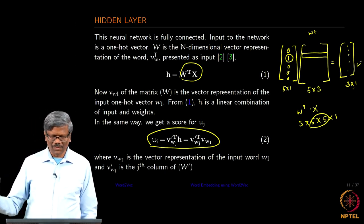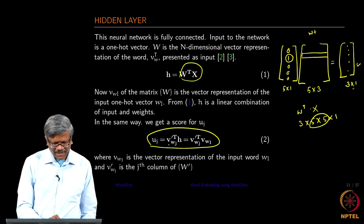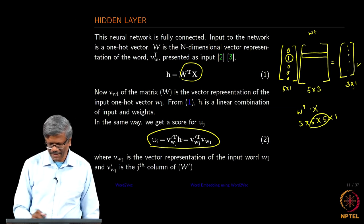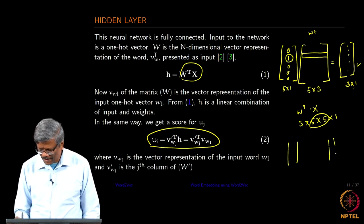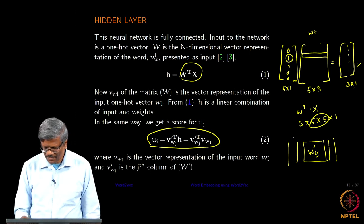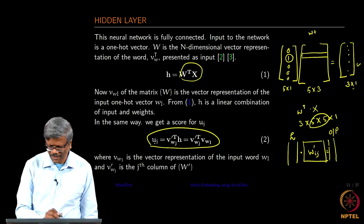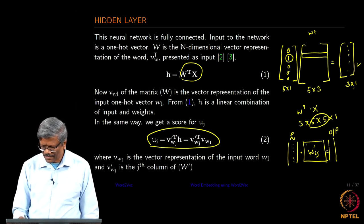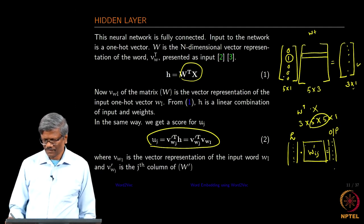We have done the calculation of h using this model. Now we have the other side from the hidden layer to the output. We apply a similar mechanism to compute u_j: u_j is equal to v_w_j dash transpose dot h. There is a hidden layer, then an output layer, and another weights matrix. We do the dot product of these two to create the output layer values. u_j is computed using the w_ij values and the output size would be equal to V by 1.